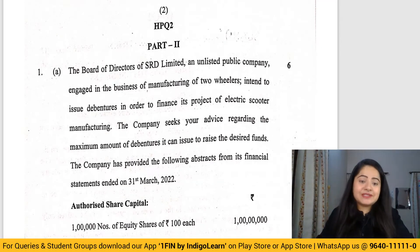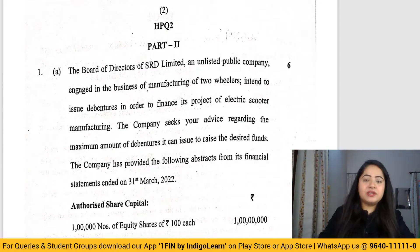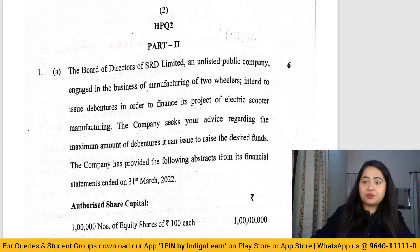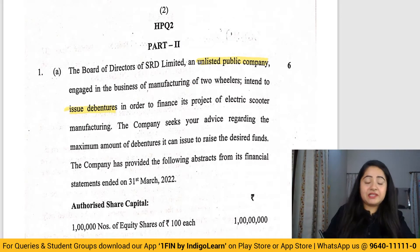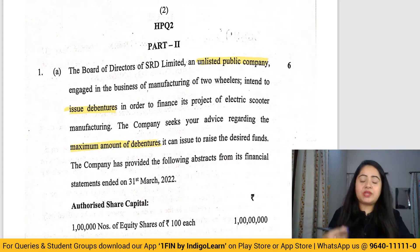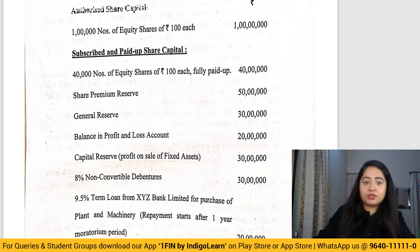The first question, the compulsory one, part A, is actually the most difficult or trickiest question of the entire paper. This question says that the board of directors of SRD Limited, which is an unlisted public company, wants to issue debentures. They are seeking your advice on the maximum amount of debentures that they can raise.